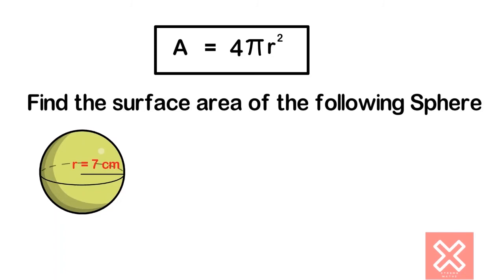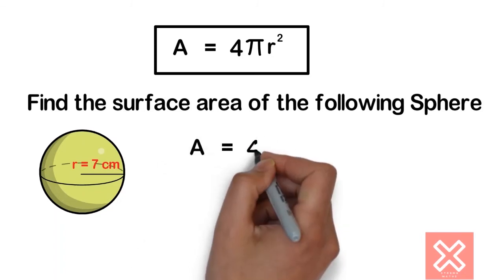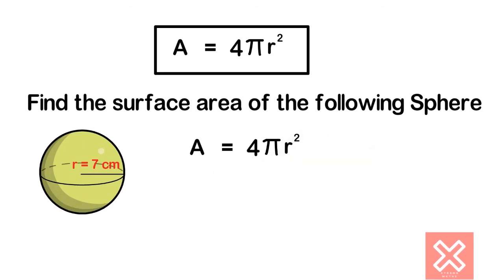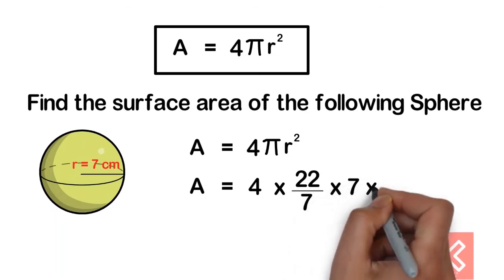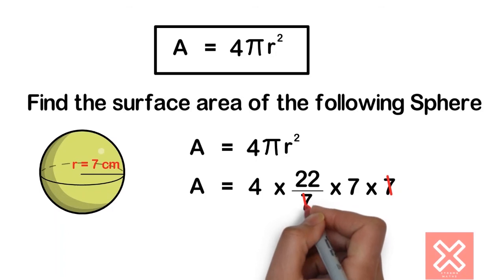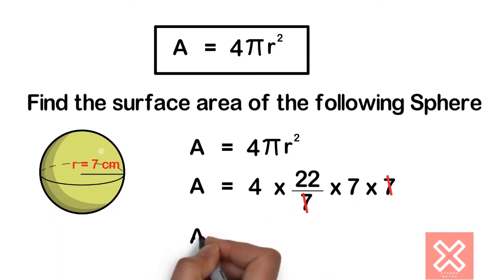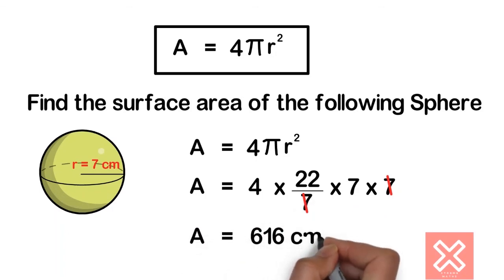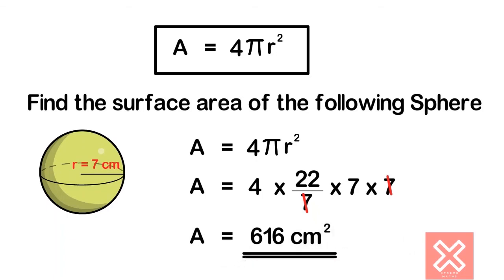Find the surface area of the following sphere. A = 4πR² = 4 × (22/7) × 7 × 7. The total surface area equals 616 square centimeters.